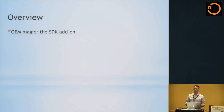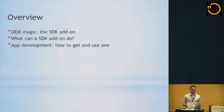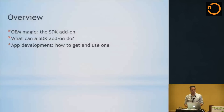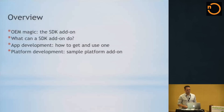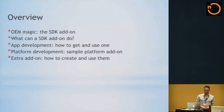Let's go over a quick overview of what we're going to talk about today. We're going to talk about OEM magic on a platform and the SDK add-on - what SDK add-ons can do and what they're capable of. We'll also talk about how app developers can take advantage of things you put into your platform. We'll look at it from a platform standpoint: if you're creating a new platform, how do you build one, how do you add value, and how do you make that available to app developers? We'll also touch on extras add-ons, which are a little different.